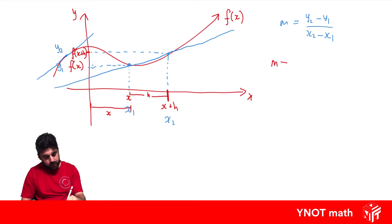So our gradient of this secant is going to be y2, which is f of x plus h, minus y1, which is f of x, over x2, which is x plus h, minus x1, which is x. So our gradient of the secant ends up becoming f of x plus h minus f of x, over x minus x is gone, so we get over h.